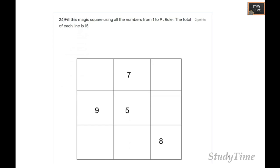Fill this magic square using 1 to 9. The total of each line should be 15. First, let's do this line: 9 plus 5 is 14. When you add, you have to get 15, so the answer will be 1. 7 plus 5 is 12, plus 3 is 15. 8 plus 3 is 11, plus 4 is 15. 9 plus 6 is 15, so next is 2. This is the correct answer. Whatever side you add, you will be getting 15.